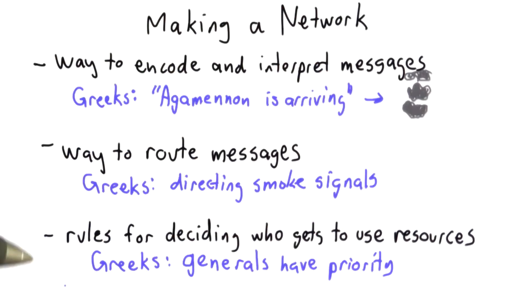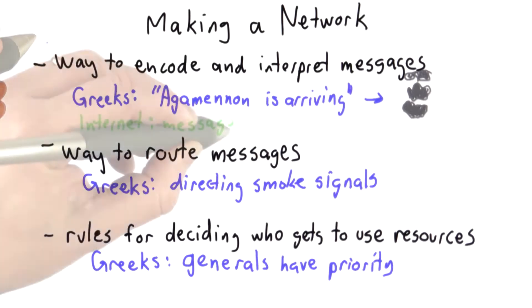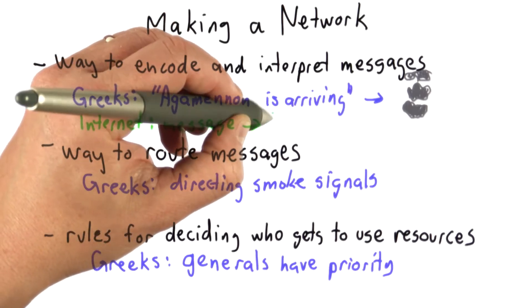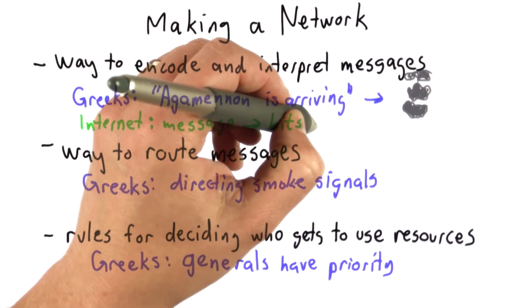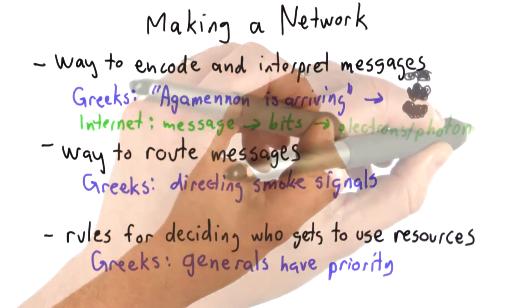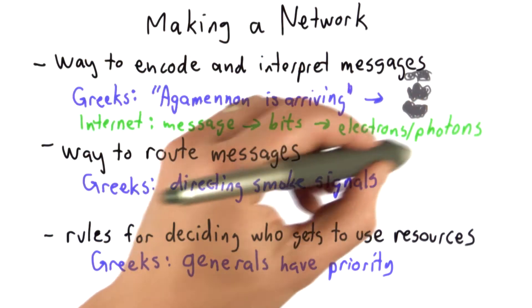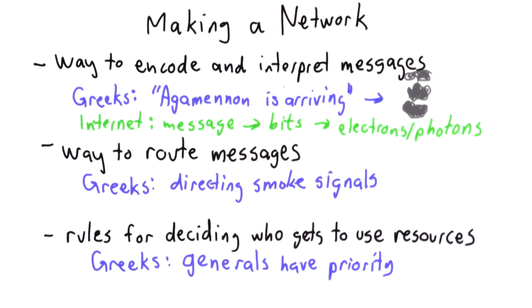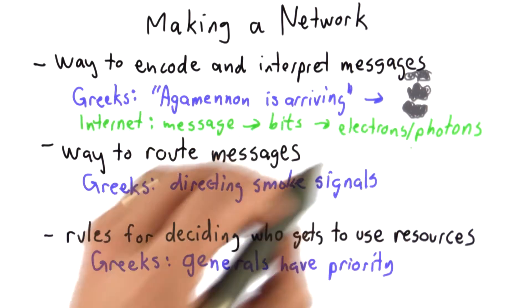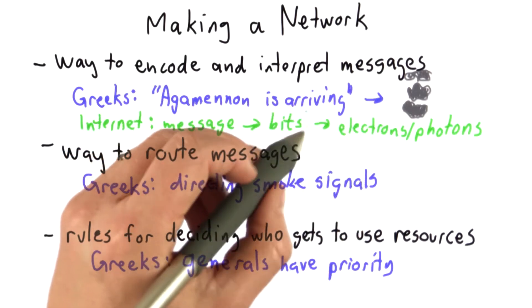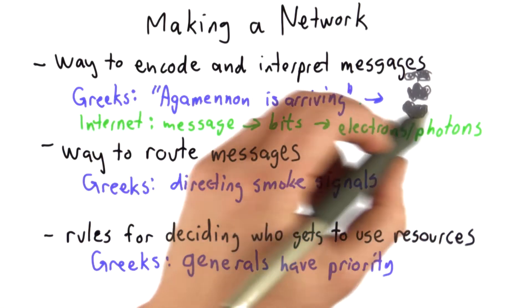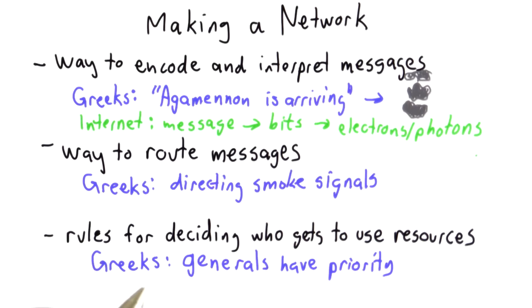So now let's go back to the things that we need to operate a network. We need a way to encode and interpret messages. We saw that we can encode any message we want in bits, and then we can encode the bits on the wire. How that encoding actually works is pretty complicated — it's not something we're going to talk about in this class — but there are lots of different ways to do it, figuring out ways for each 0 and 1 to encode that as something sent along a wire, or wirelessly.